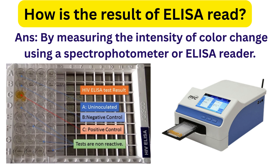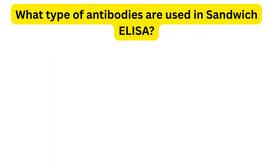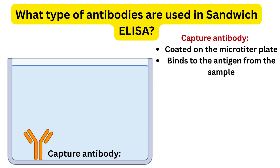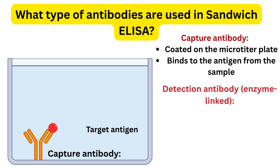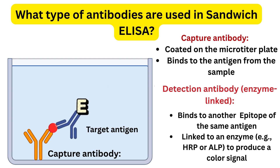In sandwich ELISA, two types of antibodies are used. First, the capture antibody, which is coated on the microtiter plate and binds to the antigen present in the sample. Second, the detection antibody, which binds to the same antigen at a different epitope. This antibody is linked to an enzyme like HRP, and when substrate is added, the enzyme gives a color change showing the test result.